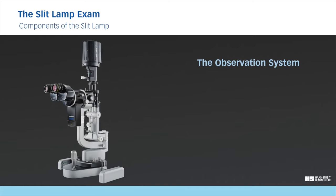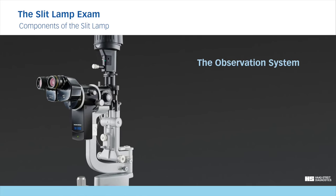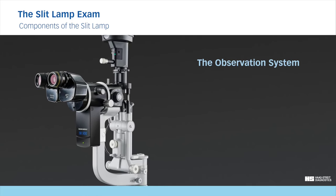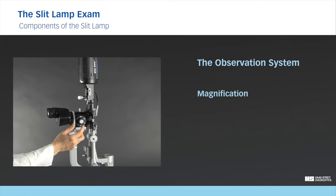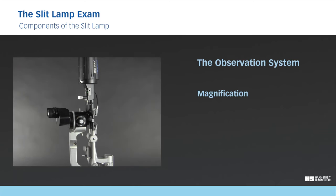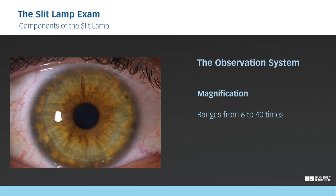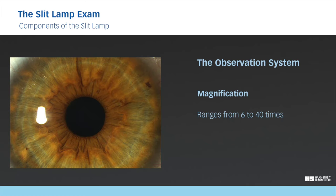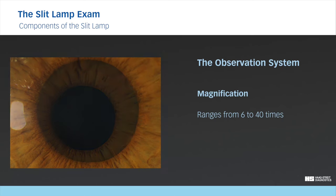The observation system provides a magnified view of the structures being observed. The magnification can easily be changed by turning the magnification dial to the desired level. In most slit lamps, the magnification ranges from 6 to 40 times. This allows the observer to use the appropriate magnification to obtain an overall view of the eye or to zoom in to observe subtle changes in greater detail.